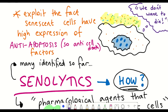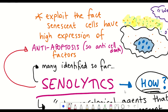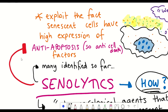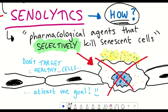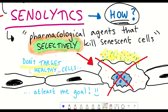The rationale behind senolytics is to inhibit the activity of these anti-apoptotic proteins and instead drive senescent cells into apoptosis. This is where the selectivity comes from, because only senescent cells have high expression of these anti-apoptotic proteins. In normal cells, it won't really have an impact — at least, that is what we hope is the case.